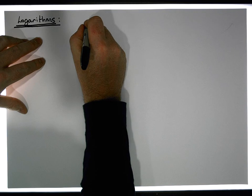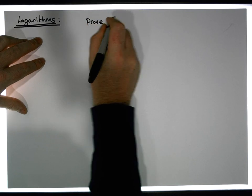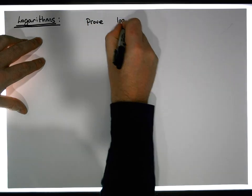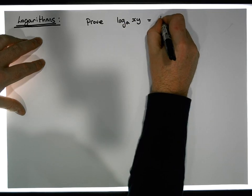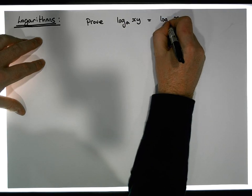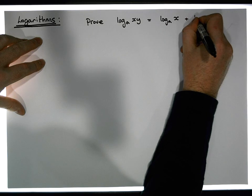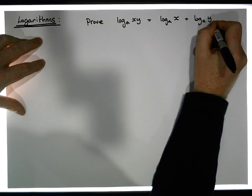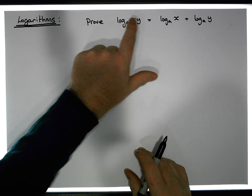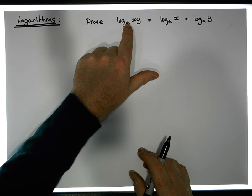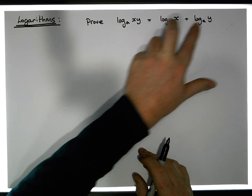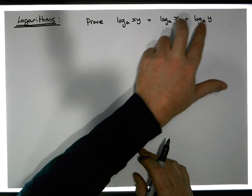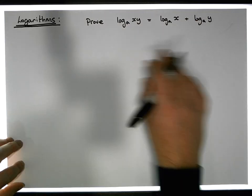What we'd like to prove is that the log of xy — the log of a product to some base a — is the same as the log of x to the base a plus the log of y to the base a. In other words, the log of a product to a particular base is simply equal to the sum of the logs of the individual factors to the same base.